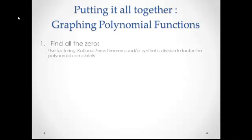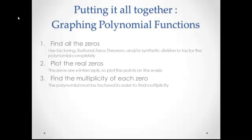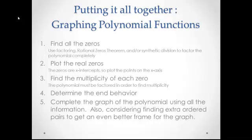So once we find all the zeros, the next step is to actually plot all the zeros, and the only zeros we'll plot will be real zeros. If we end up with any that are imaginary, they won't actually be on our x-axis. We can find the multiplicity of each zero at that point, determine end behavior, and then finally we can go ahead and just complete the graph.